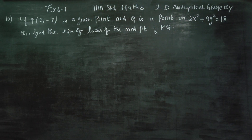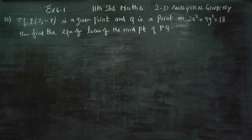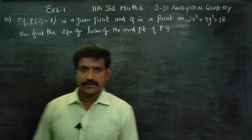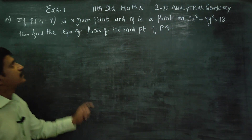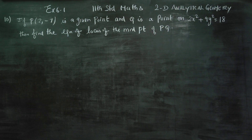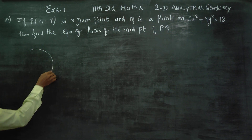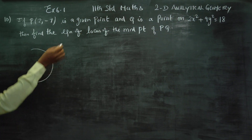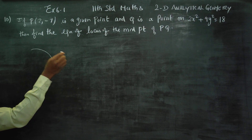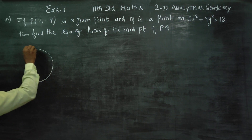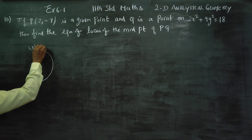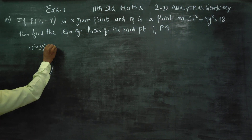Dear students, in exercise number 6.1, sum number 10: if P(2, -7) is a given point and Q is a point on 2x squared plus 9y squared equals 18. The curve is 2x squared plus 9y squared equals 18.